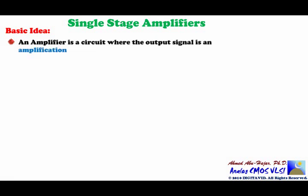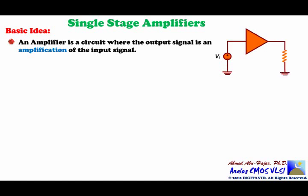An amplifier is a circuit where the output signal is an amplification of the input signal. If we have an amplifier, it will take an input signal — a voltage called VI, though it could also be a current — and send it to the output, which is the voltage across a resistor called RO. The output signal is the output voltage VO.